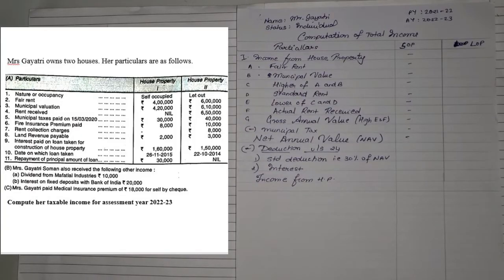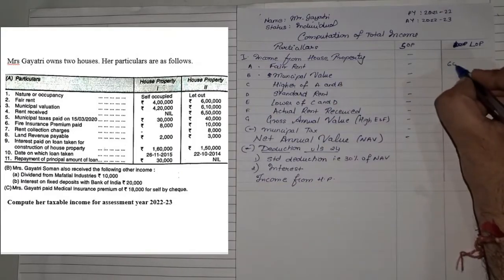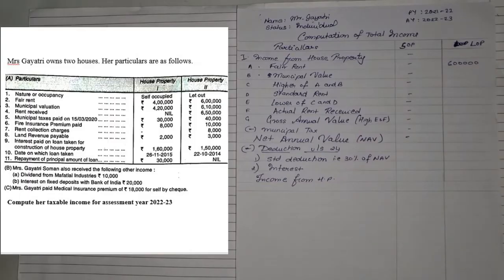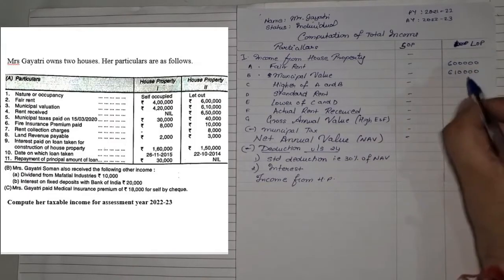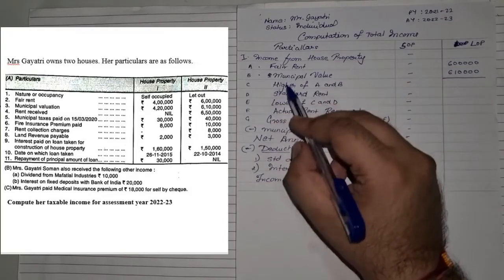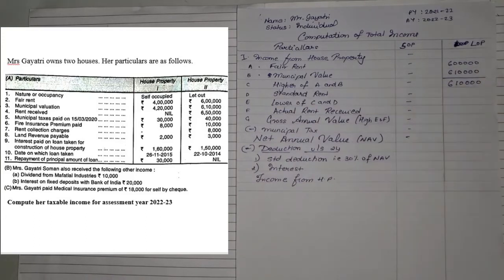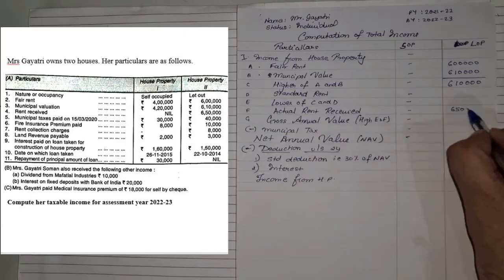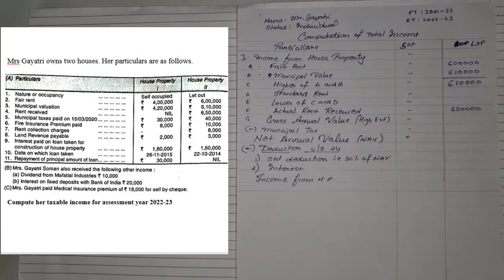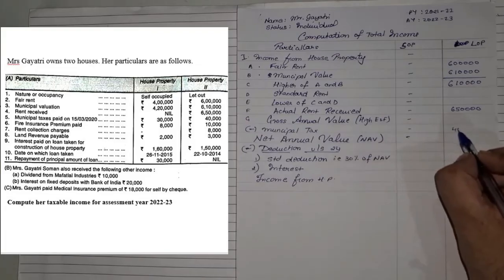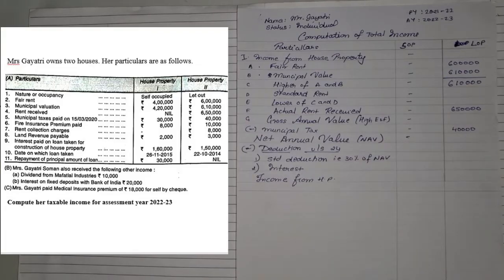The very first thing given is fair rent: 6 lakhs. After that, municipal valuation: 6 lakhs 10,000. Point C is higher of A and B, so the higher value among these two is 6 lakhs 10,000. Next, rent received is 6 lakhs 50,000. Next, municipal tax paid is 40,000. The rule is municipal tax has to be paid by the owner, and only actual payment is allowed — no outstanding will be noted.